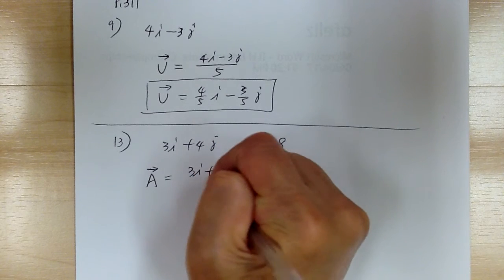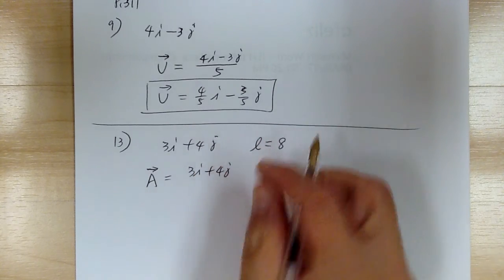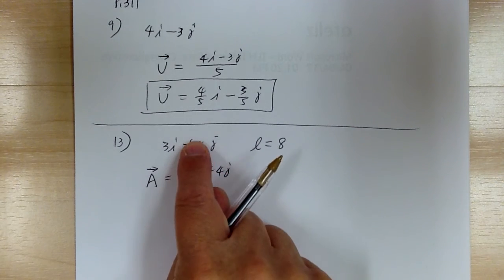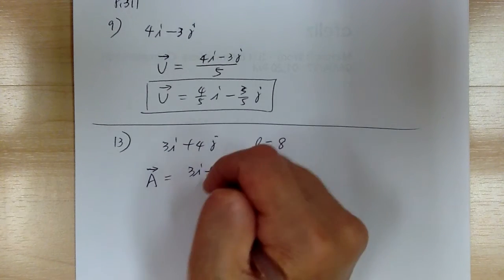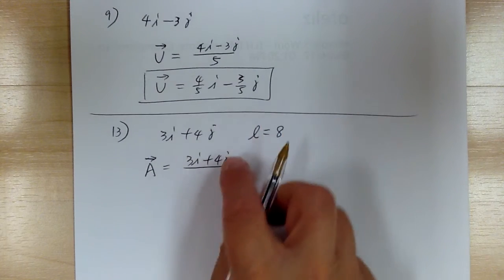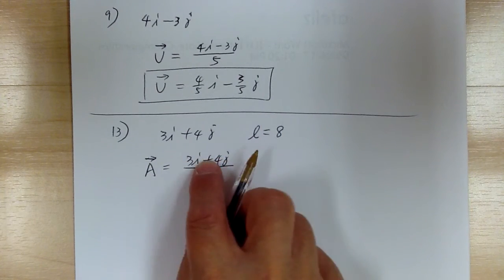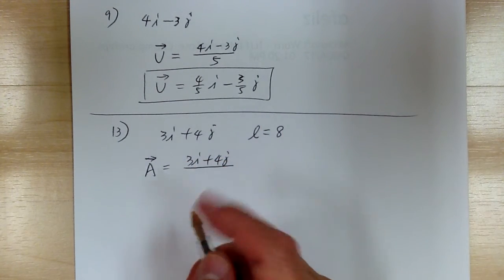So first, always get your direction first. So now this is the same direction as that, so your direction is correct. But now you have to get to the length of 8. So to get to the length of 8, first you're going to divide by this length. This is the length of 5, so you want to get to the length of 1, just like the previous problem.